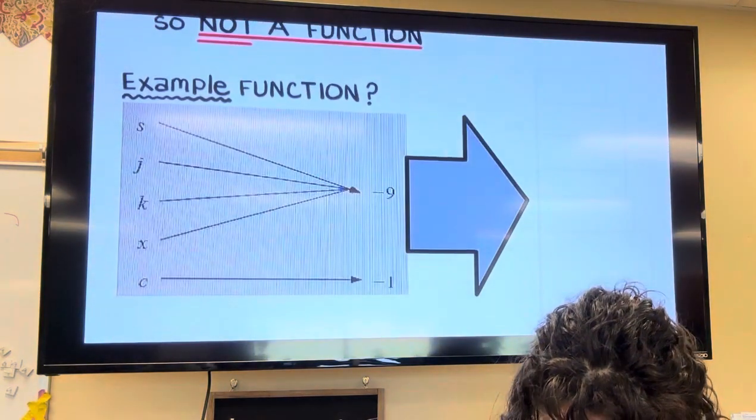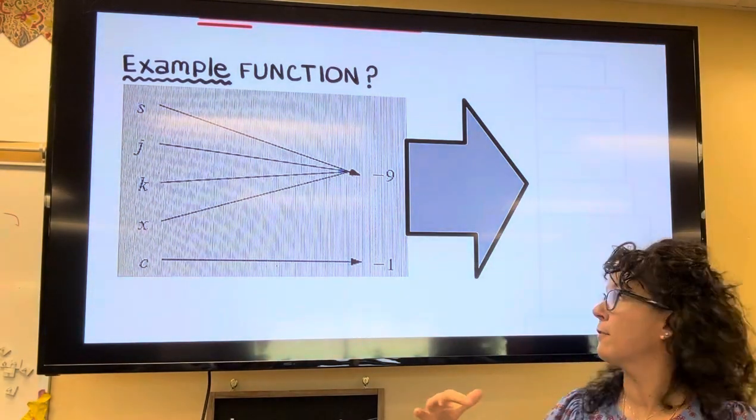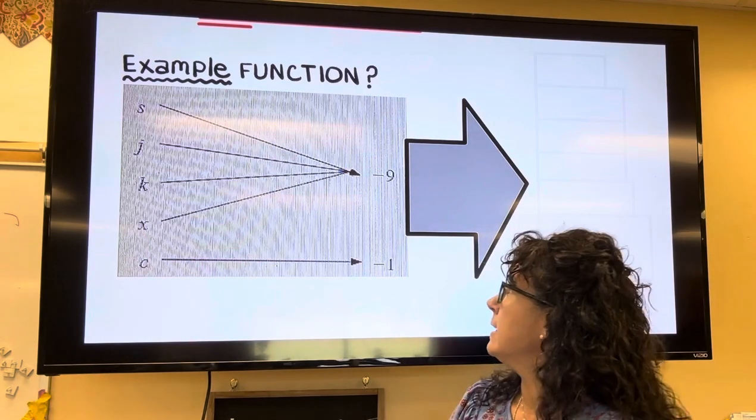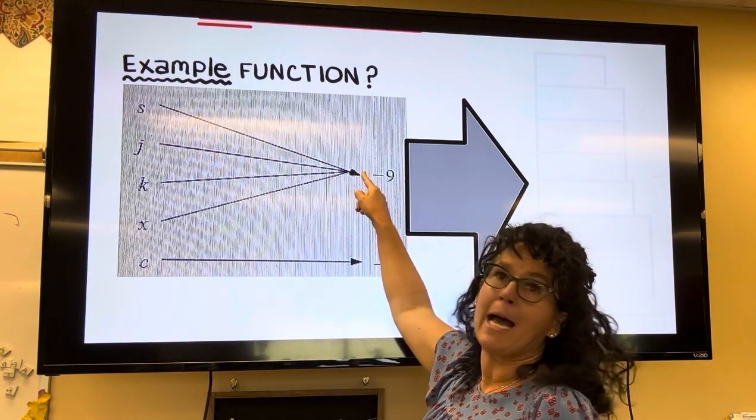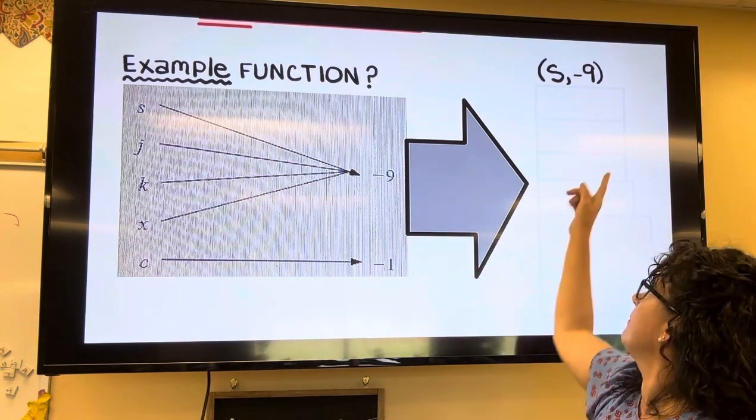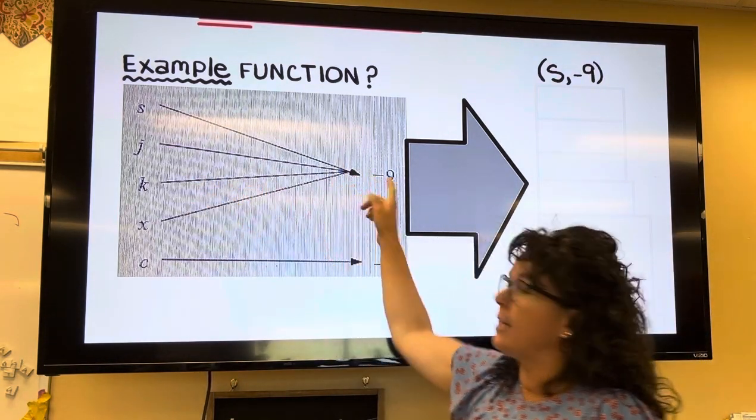Then the next one here, they've just provided us with the information in a little bit different format. They have these arrows, but the meaning is that s gets mapped to negative 9. So in other words, that's the point s comma negative 9. J goes to negative 9.